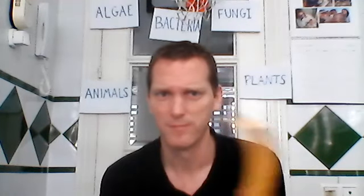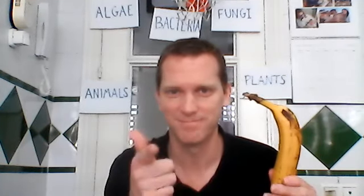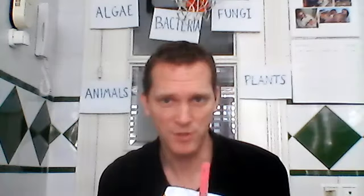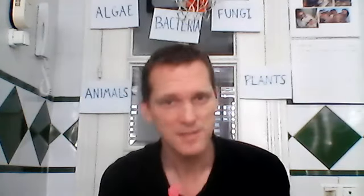Number one — it's a banana. What group? If you said plants, correct. Number two — sugar. It's okay to have sugar, but not too much. What group is it from? It comes from a living thing — it comes from sugar cane, which is a plant.